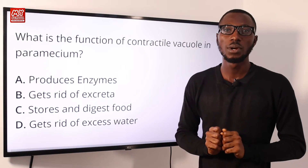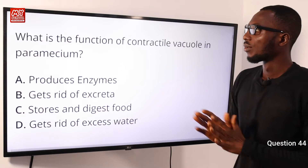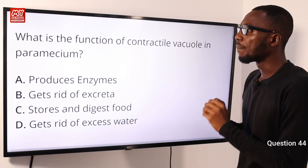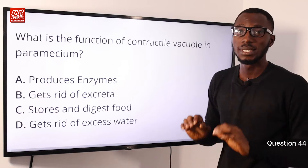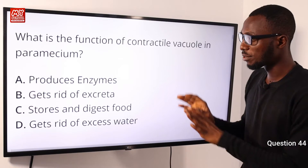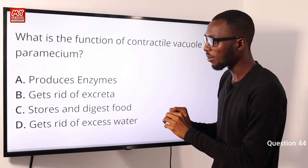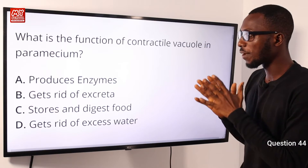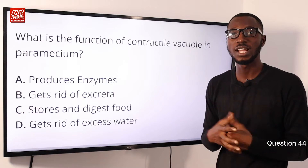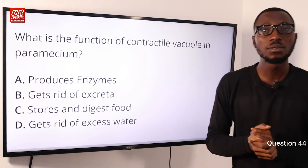Question 44: What is the function of the contractile vacuole in Paramecium? This is just for osmoregulation. So when we scan through our options, option D is correct — to get rid of excess water for regulation of water content in the Paramecium.